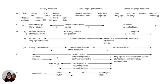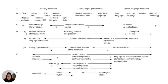Level D then covers the translation process, including: understanding the function of the source text, the target text focus, and the communicative function of the target text. Level E covers areas of linguistics relevant to translation.